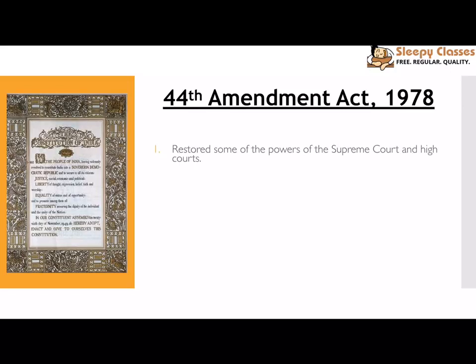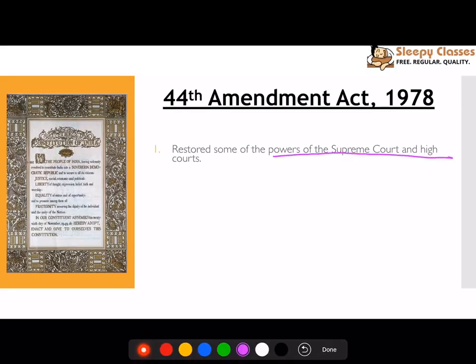First, the 44th Amendment Act tried to restore the powers of the Supreme Court and High Court, especially with regard to their writ jurisdiction and judicial review power, which the 42nd Amendment had tried to curtail.